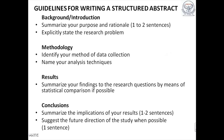Here are some tips for writing a good structured abstract. For the background or introduction, summarize the purpose and the rationale in one or two sentences, and the research problem has to be explicitly stated. In the methodology section, write down the methods and techniques of analysis used. For results, summarize the findings to the research questions by means of statistical comparison if possible. For the conclusion, summarize the implication of the results in one or two sentences, suggest the future direction of the study when possible, or indicate major limitations if any.